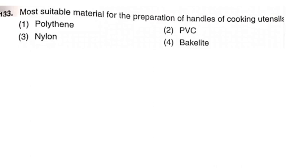Next question: The most suitable material for the preparation of handles of cooking utensils. Options: polythene; PVC; nylon; Bakelite. The correct option is Bakelite.